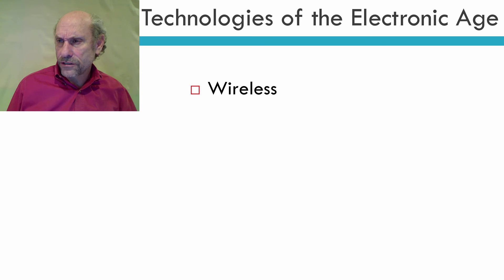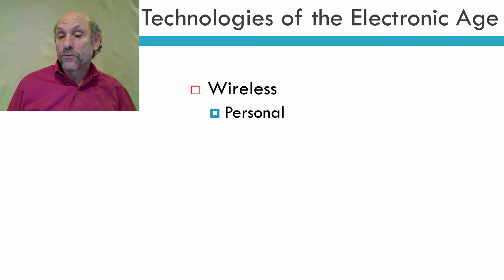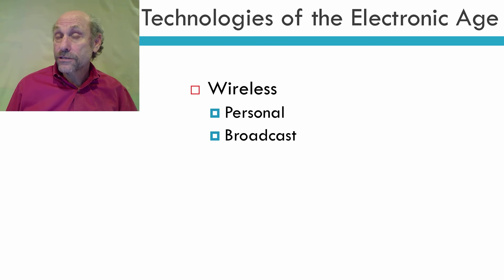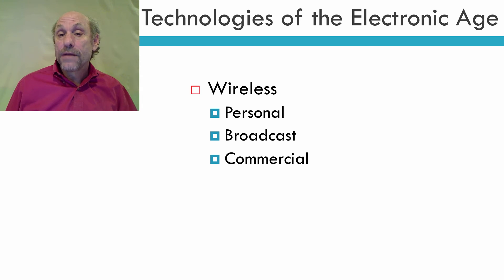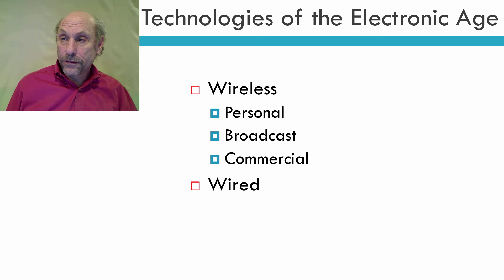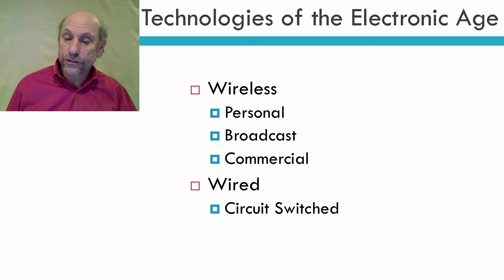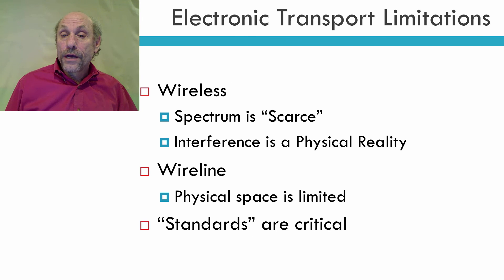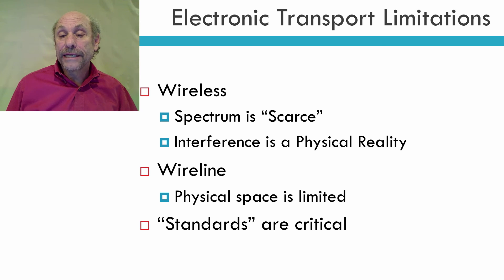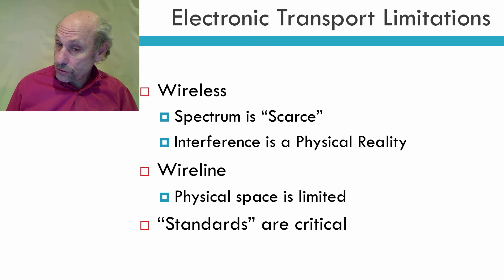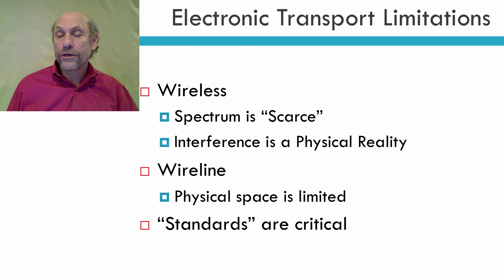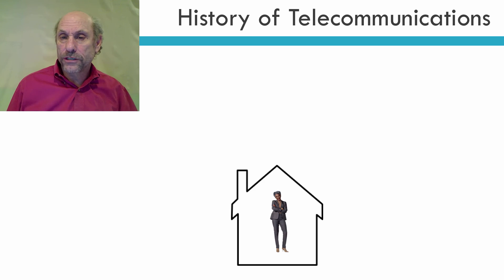Let me talk about just the two technologies of the electronic age. We have wireless, which includes personal uses like ham radio operators or two-way radios, broadcast such as radio and television, and commercial uses like cellular and satellite technology. We also have wired technology — we traditionally had circuit-switched, and now we have packet-switched. These two technologies have certain limitations: in wireless, spectrum is scarce and interference is a physical reality; in wireline, physical space is limited. Standards are critical to electronics transport.